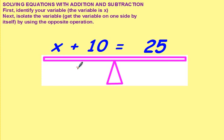x is being added by 10, so we want to subtract 10. If you have 10 and you take away 10, together those are 0. So all that's left on this side is x. x is by itself, which is what we want.